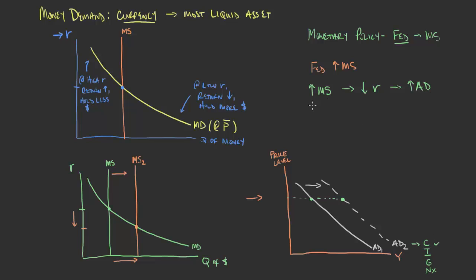The exact opposite is also true. If the Federal Reserve were to decrease the money supply — perhaps because they've set a target to increase the interest rate — that would shift the money supply curve to the left. This would have a decreased effect on aggregate demand; we would see a shift of aggregate demand to the left, restricting the money supply, increasing the interest rate, and reducing consumption and investment.